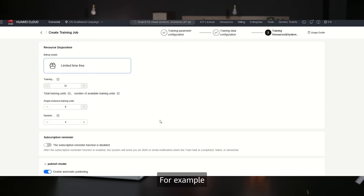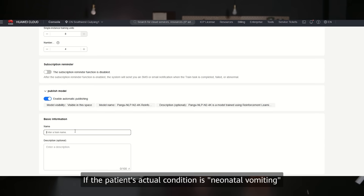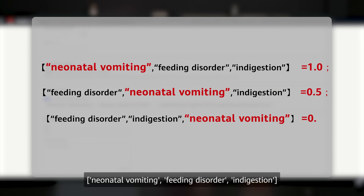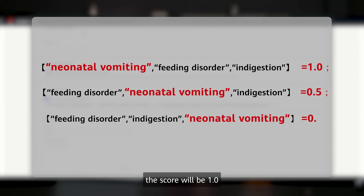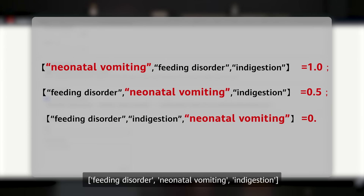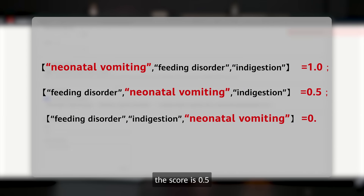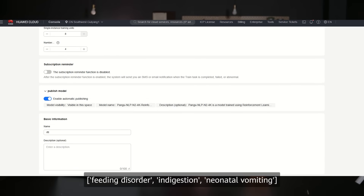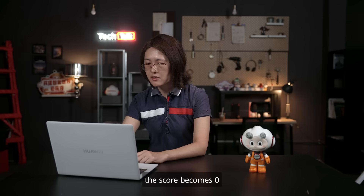For example, if the patient's actual condition is neonatal vomiting and the model outputs the ranked list: neonatal vomiting, feeding disorder, indigestion — the score will be 1. If the model outputs: feeding disorder, neonatal vomiting, indigestion — the score is 0.5. If the output ranking is: feeding disorder, indigestion, neonatal vomiting — the score becomes 0.